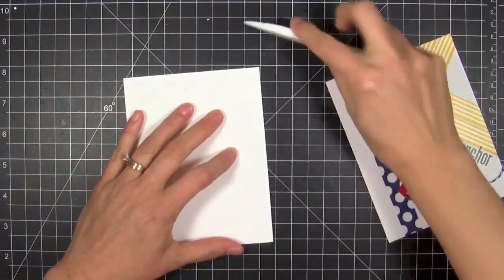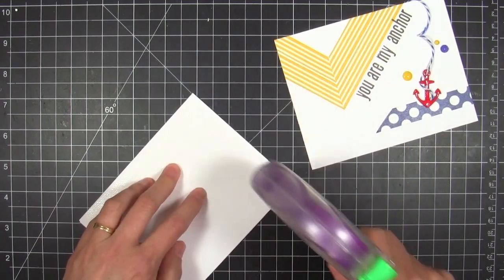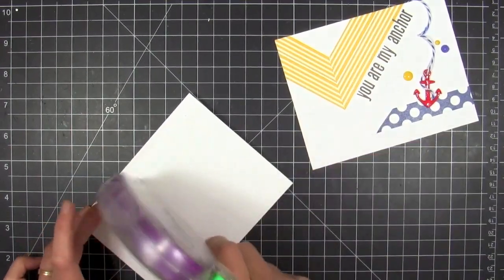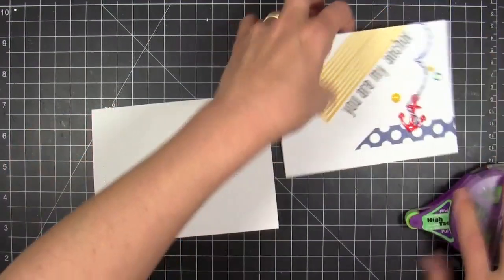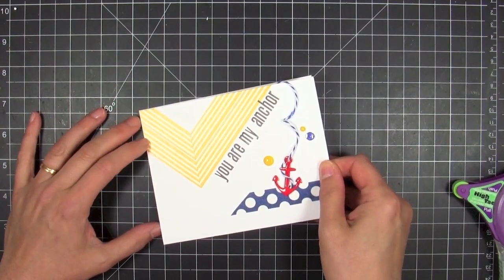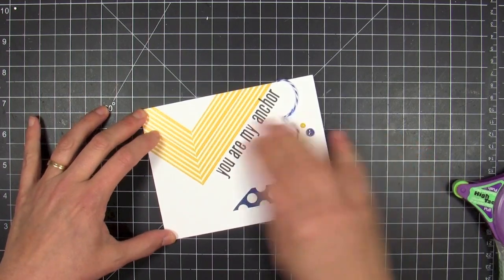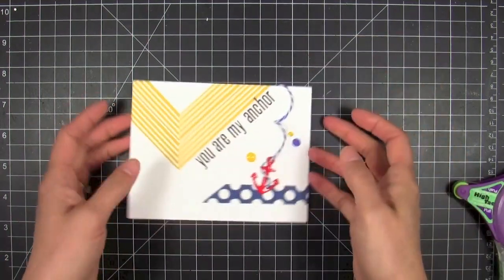Then I can go ahead and mount the whole panel to the card front. So I could have done all of this on the card base itself, but sometimes, you know, when you're experimenting, it helps to just do it on a quarter sheet and then mount it to a card base and you're good to go. It's just one of those things that I like to do sometimes if I'm trying something I've never done before.